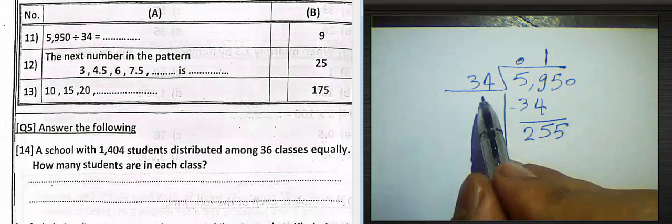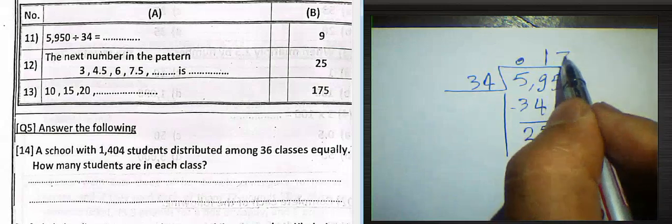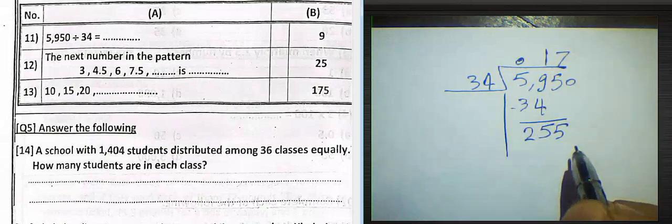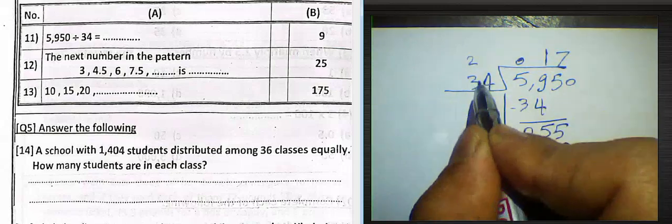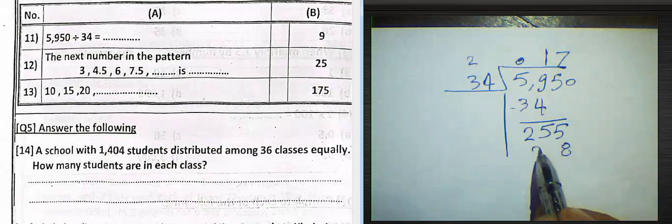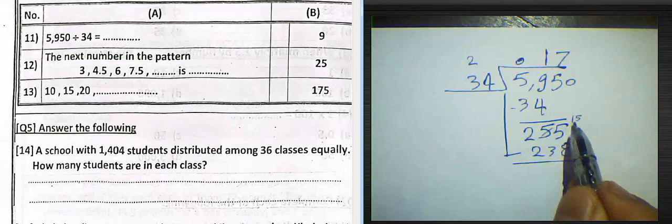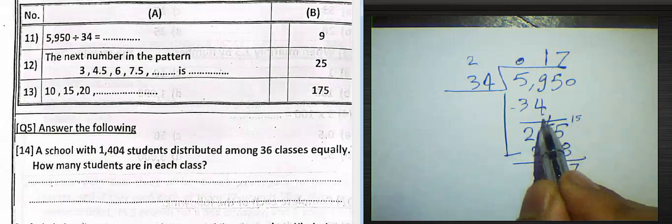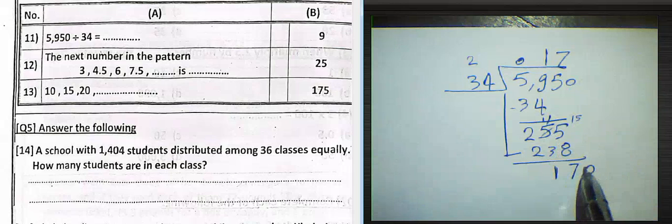255 divided by 34 equals 7. 4 times 7 equals 28. Write 8 and carry up 2. 3 times 7, 21 plus 2 equals 23. Subtract. It will be 15 minus 8 equals 7. 4 minus 3 equals 1. 0 here.